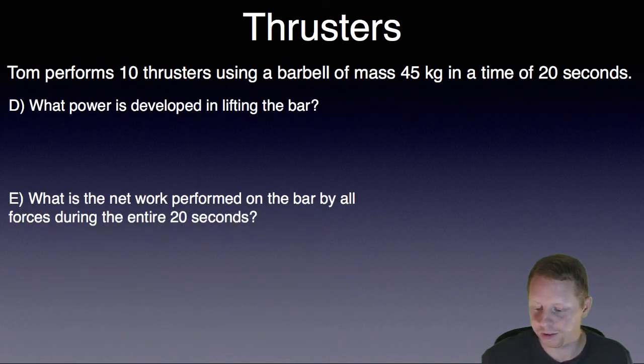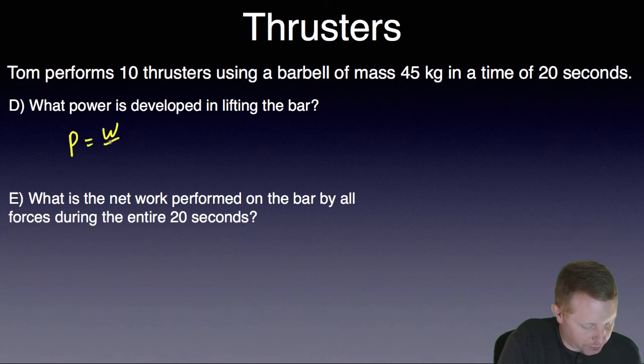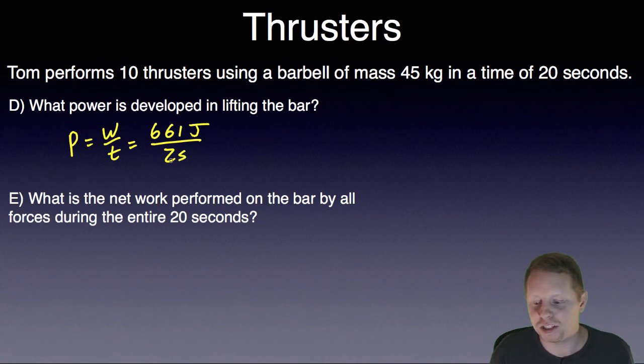Moving on. What power is developed in lifting the bar? Well power is the rate at which work is done. So power is just going to be work divided by time, which was 661 joules, and he did all of that in 2 seconds for each one. So the power each time he lifted the bar was 331 watts.